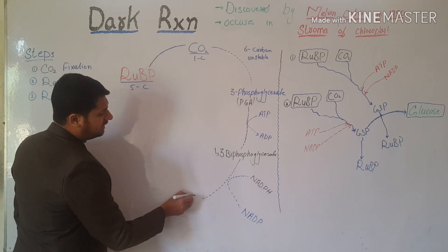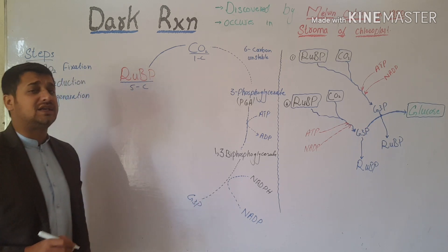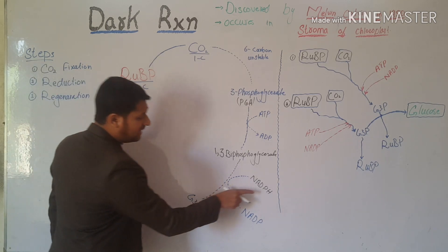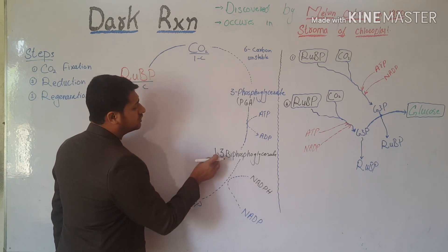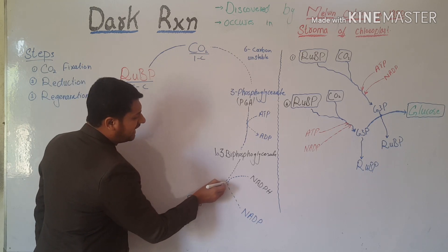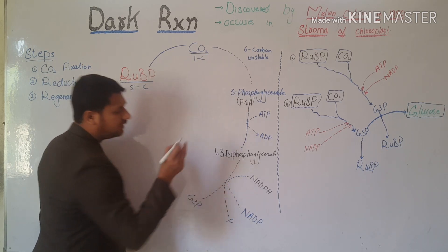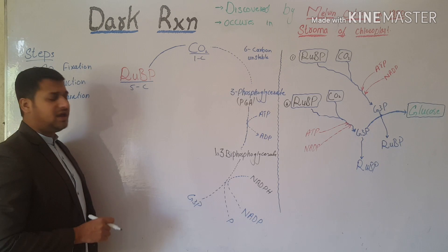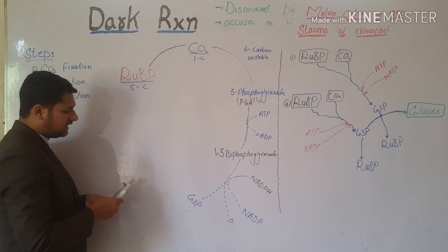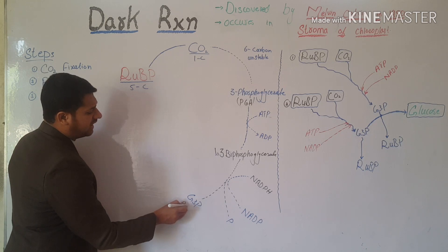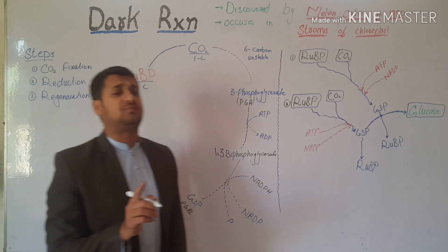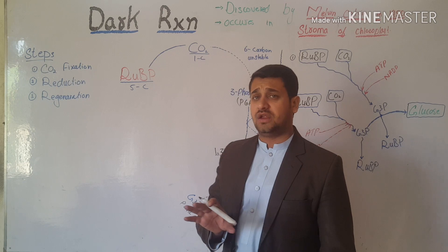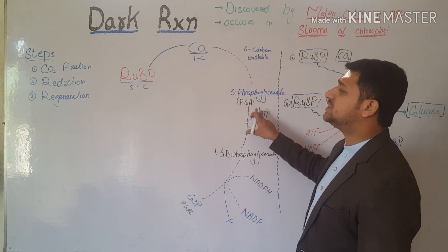This molecule produces G3P, which is glyceraldehyde-3-phosphate. When hydrogen from NADPH enters the reaction, the phosphate on carbon number 1 is released. This is why the molecule remaining is G3P — glyceraldehyde-3-phosphate. This molecule is actually called PGAL. PGAL is the reduced form of PGA.